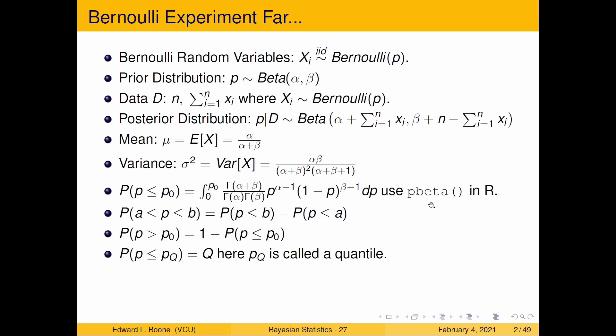We talked about how to get probabilities out of the posterior distribution just using pbeta. We talked about how to get probabilities between two numbers or probably greater than two numbers using the one minus trick, the complement. And we also talked about how to get a quantile and we actually got last time an interval using quantiles and we'll do that again here just to reinforce the idea.